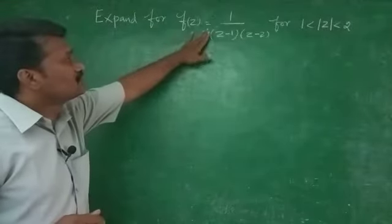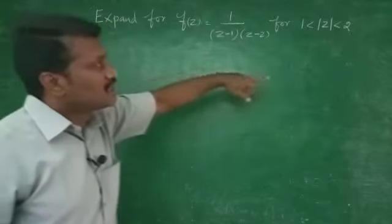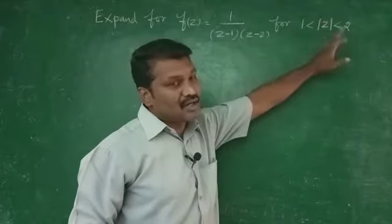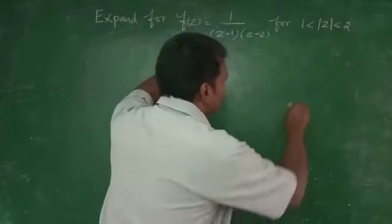Expand f(Z) = 1/((Z-1)(Z-2)) for |Z| greater than 1 and less than 2.